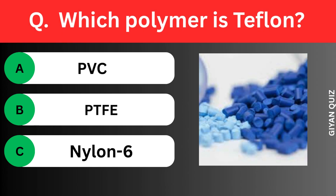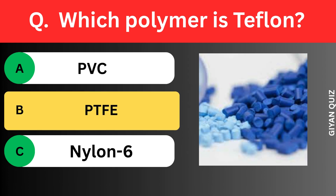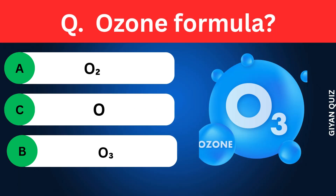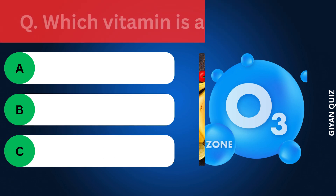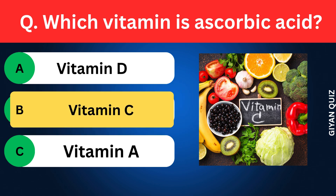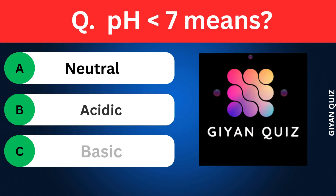Which polymer is Teflon? Options: Polyvinyl chloride, Polytetrafluoroethylene (PTFE), Polyamide 6 or polycaprolactam. Correct answer: polytetrafluoroethylene. Ozone formula? Options: Atomic oxygen, O₂, Ozone (O₃). Correct answer: ozone (O₃). Which vitamin is ascorbic acid? Options: Vitamin D, Vitamin C, Vitamin A. Correct answer: Vitamin C.